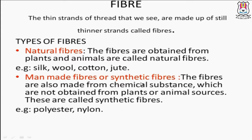Natural fibers: the fibers that are obtained from plants and animals are called natural fibers — example: silk, wool, cotton, and jute. Man-made fibers or synthetic fibers: the fibers that are made from chemical substances which are not obtained from plants or animal sources are called synthetic fibers — example: polyester and nylon.